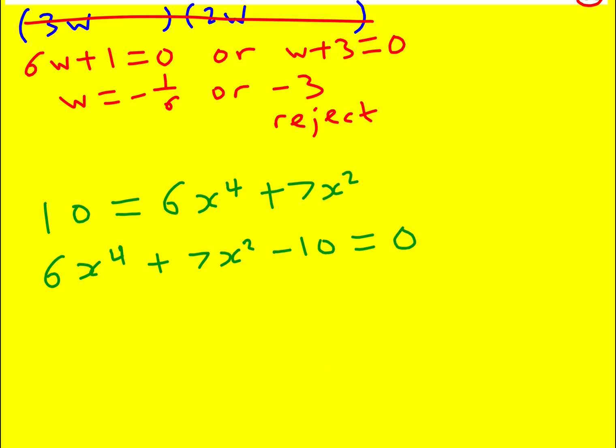I wonder if this is going to work now. I'm trying it this way. But I could actually do a substitution. I could let u equal x squared. And then suddenly I'd get that u squared is x to the 4. And I'd get 6u squared plus 7u minus 10 equals 0.